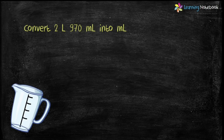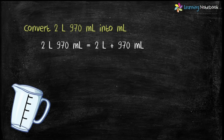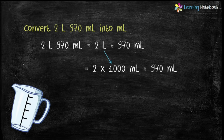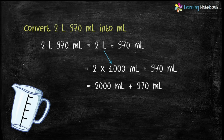Second question: convert 2 liters 970 milliliter into milliliter. This means 2 liters plus 970 milliliter. 970 is already in milliliters. We convert 2 liters: one liter equals 1000 ml, so two liters equals 2000 ml. Adding 970 ml gives us 2000 plus 970, which equals 2970 milliliter.